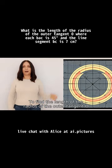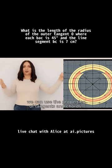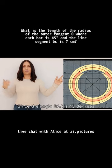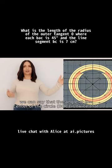To find the length of the radius of the outer tangent O, we can use the properties of tangents and chords. Since the angle BAC is 45 degrees, we can say that the angle at the center of the circle, BOC, is twice that, which is 90 degrees.